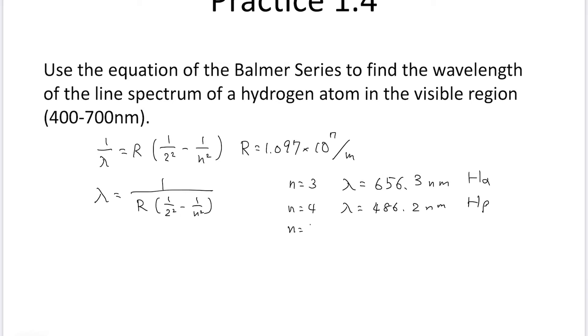Substitute n equal to 5, lambda equals 434.1 nanometers. This is H gamma.